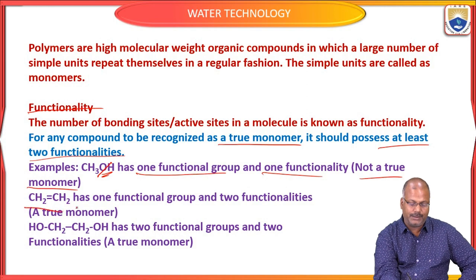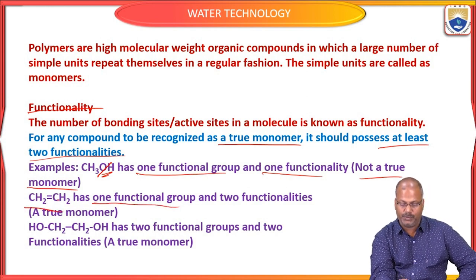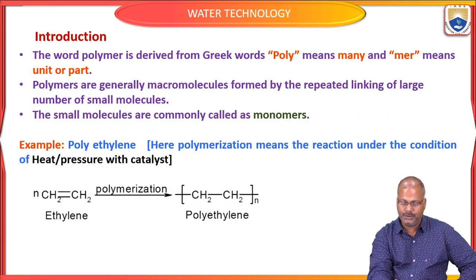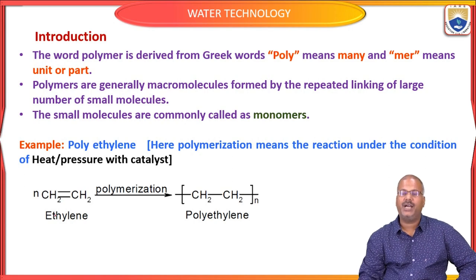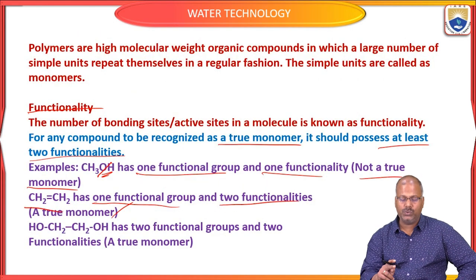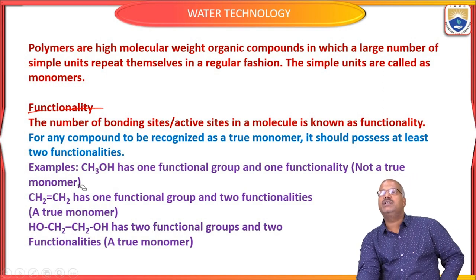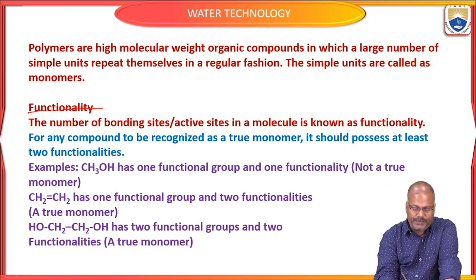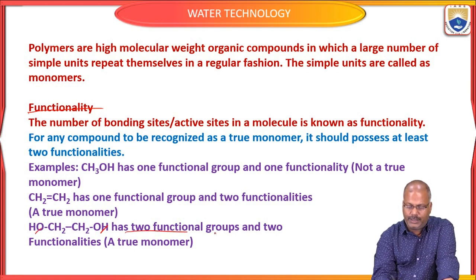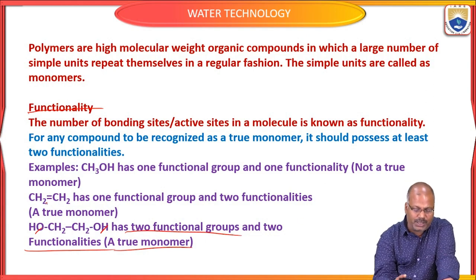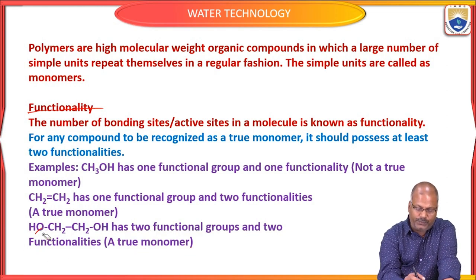Ethylene contains a double bond, so it has two functionalities — which makes it a true monomer. In polyethylene, the double bond becomes a single bond and the chain continues. Similarly, ethylene glycol has two functional groups and hence two functionalities, making it also a true monomer. Either two functional groups or a double bond — both confer two functionalities.